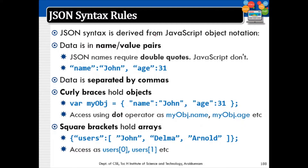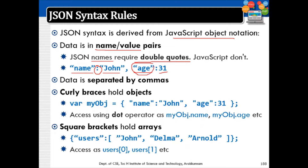Moving on to syntax rules. The syntax of JSON is derived from JavaScript object notation. We can have name-value pairs — that is the main difference between XML and JSON. JSON names require double quotes, but JavaScript does not. The name is in double quotes, separated from its value by a colon. For a numerical value, there is no need to include it within double quotes; only the variable name needs double quotes.